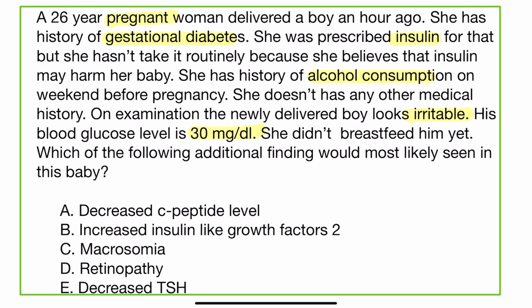The pregnant woman has a history of diabetes but does not take insulin for that, so she has uncontrollable diabetes. She also consumes alcohol, but that is not significant for the fetus because the consumption was before the pregnancy and in low quantity. The key findings are an uncontrollable diabetic mother and a hypoglycemic fetus, and the question is asking about the diabetic mother's effect on the fetus.